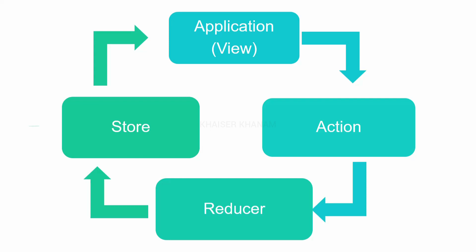So action collects the data from the application, and based on the action, that data is sent to the reducer. The reducer sends the data to the store, updates the previous state, and we get the new state. That new state is our current state.